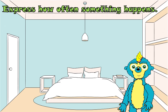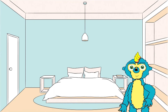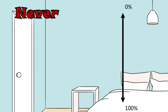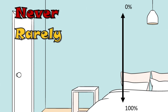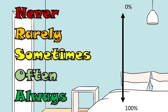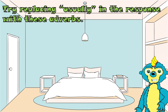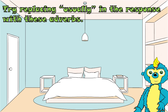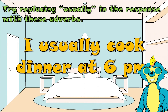We're going to use adverbs to express how often something happens. Here's a useful example: NEVER, RARELY, SOMETIMES, OFTEN, ALWAYS. NEVER means there's zero chance. ALWAYS is something that happens regularly. We can try replacing USUALLY in the response with these adverbs. I usually cook dinner at 6pm — replace USUALLY with one of these adverbs.